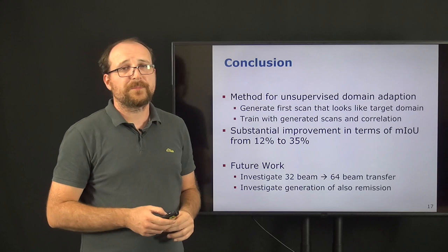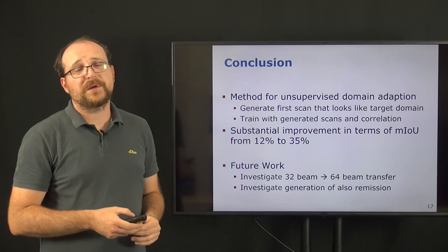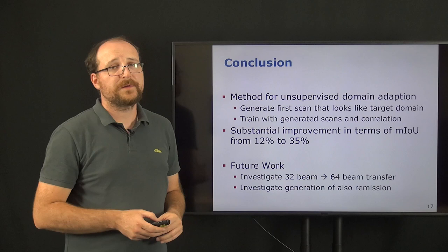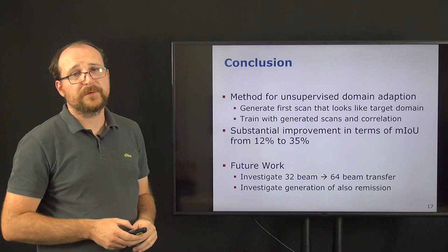To summarize my talk, we present a method for unsupervised domain adaptation, where we generate first a scan that looks like it would have been taken from a target sensor in a target domain. Using this generated scan, we train then the model and furthermore use the correlation alignment to further improve the results. This leads to substantial improvements in terms of the mean intersection over union, which got improved from just 12% mIoU to 35% mIoU.